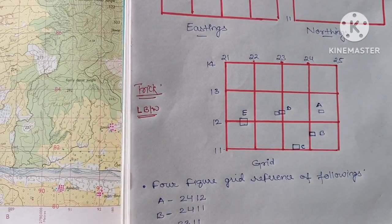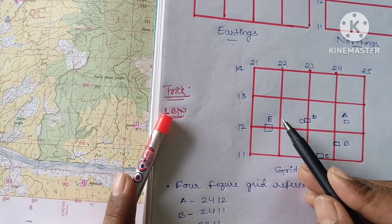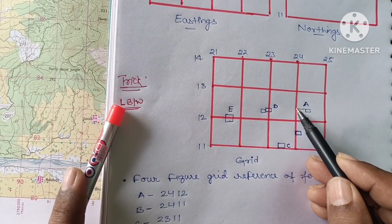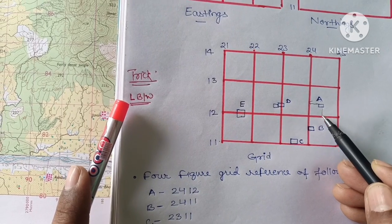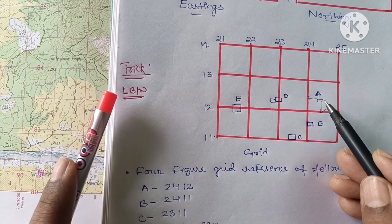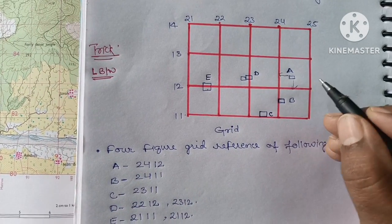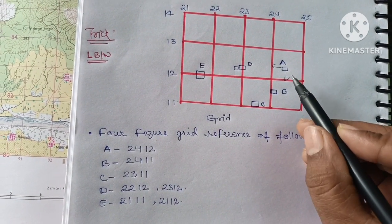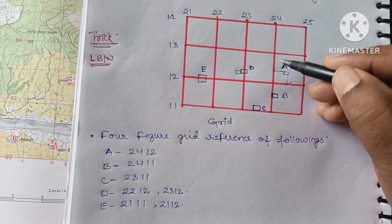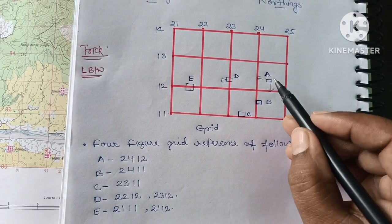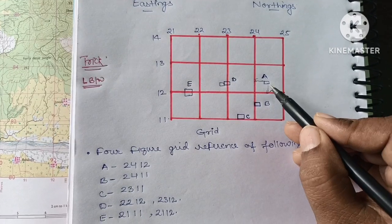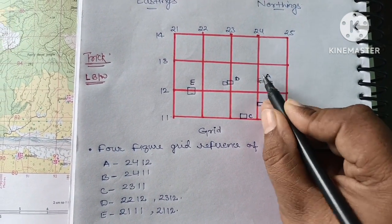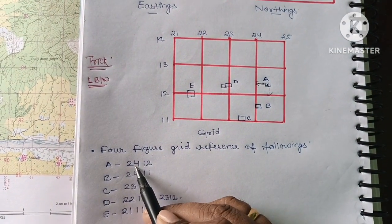LBW means L stands for left line, B means below line, and W means the wanted object. So suppose you are finding the four-figure grid reference of any line or any feature. Then you have to mark the left line. Its value is 24. First, you will write 24. For example, suppose you are finding the four-figure grid reference of A. So this is the feature. You have to find four-figure. Then you will mark its left line. Left line's value is 24. So you will write here 24.